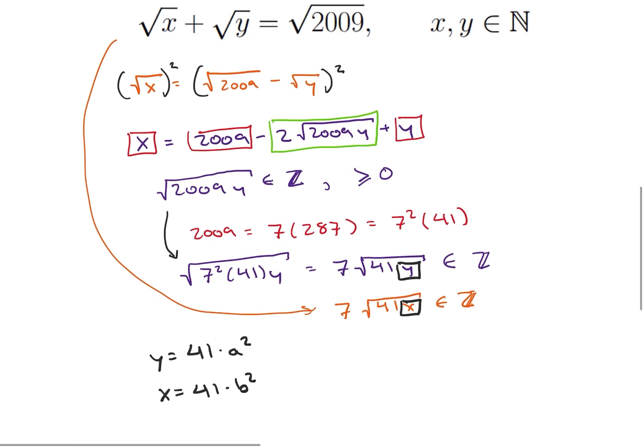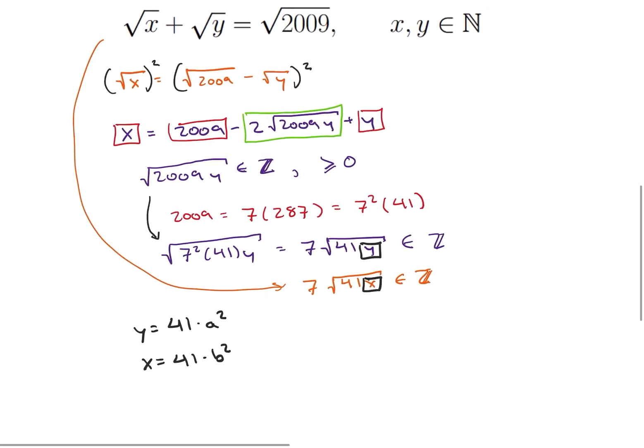So we've kind of boiled this down just a little bit. So now what we can do is let's go ahead and look at our original equation and plug those guys in there. So I get the square root of 41b squared plus the square root of 41a squared is equal to the square root of, and what was 2009? Well, 2009 was the square root of 41 times 7 squared.